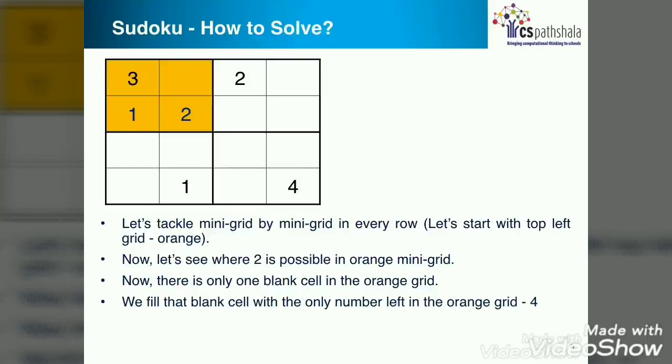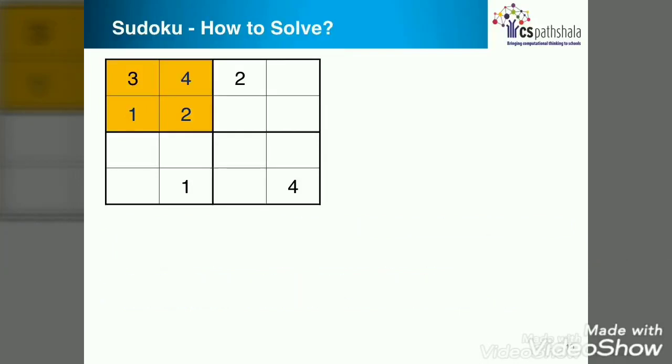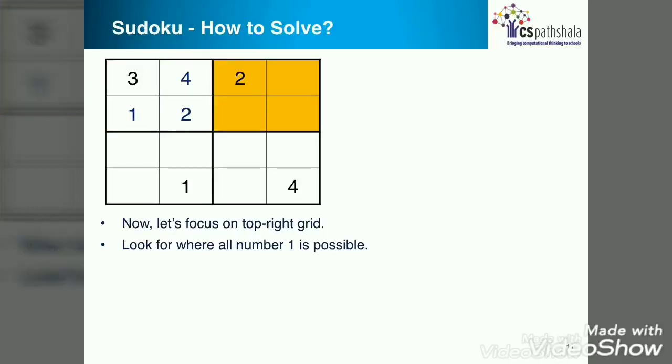Now there is only one place left and we have only one number 4. So let's put 4 in the empty place. So this grid is complete. What do we do next? We need to solve a different square grid.